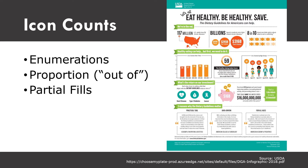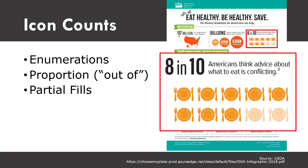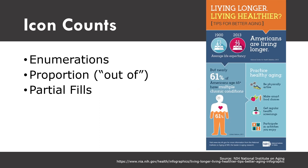We also use icons and counting for proportions. In this infographic about healthy eating, we say 8 in 10 Americans think advice about what to eat is conflicting. We do something very common on infographics: we create an array of 10 icons and shade or make colorful eight of them, while decreasing the opacity of the other two — making them more transparent or grayed out. This extends to something called partial fills.